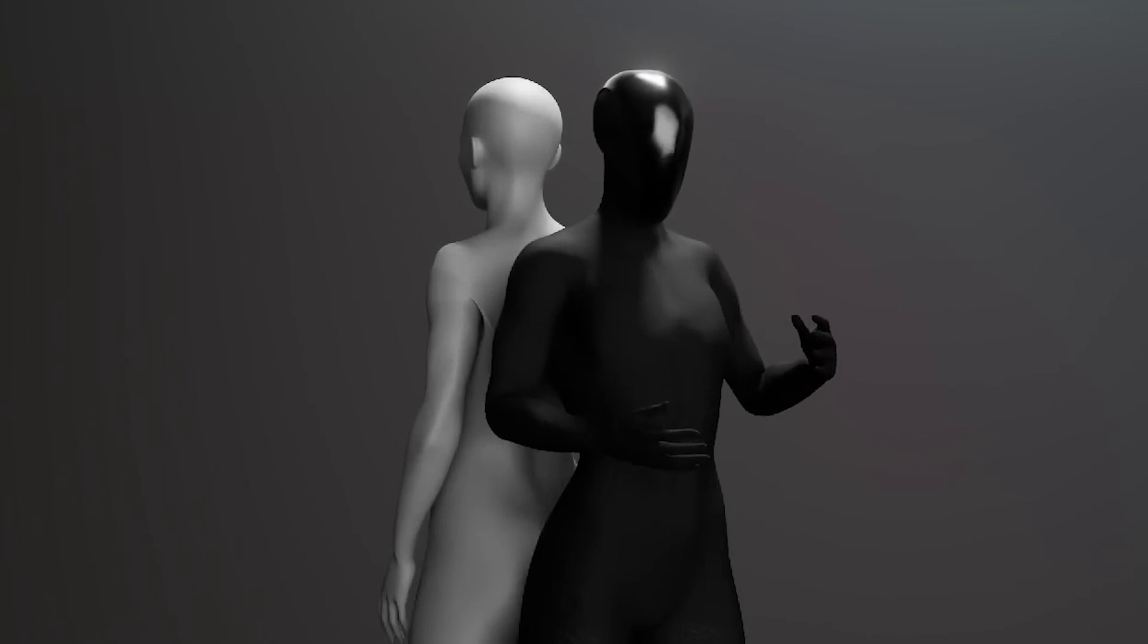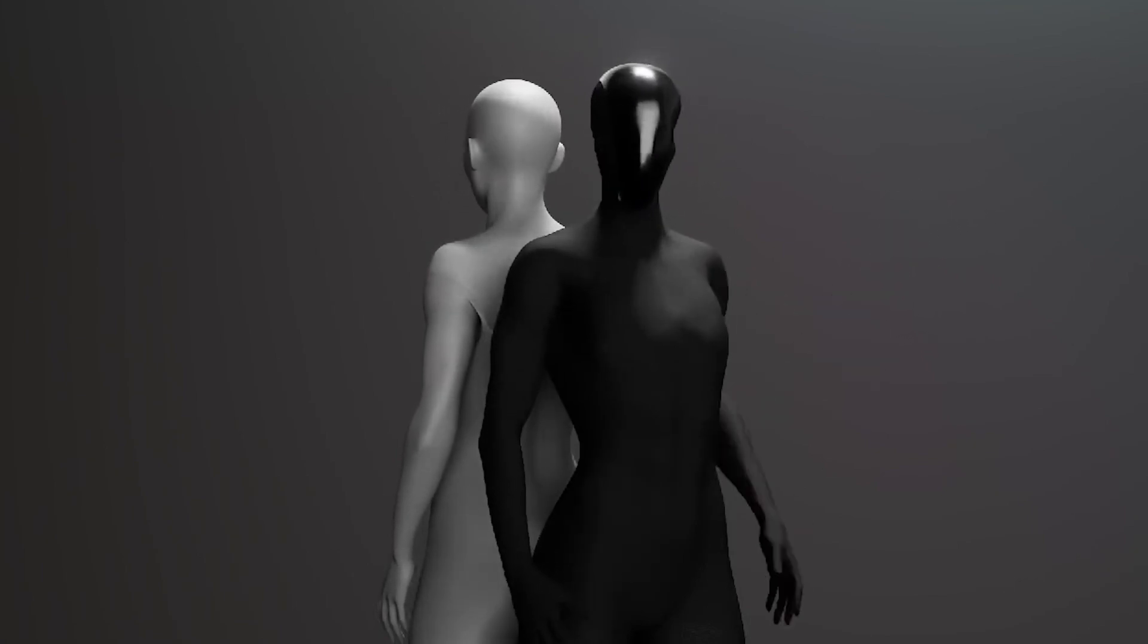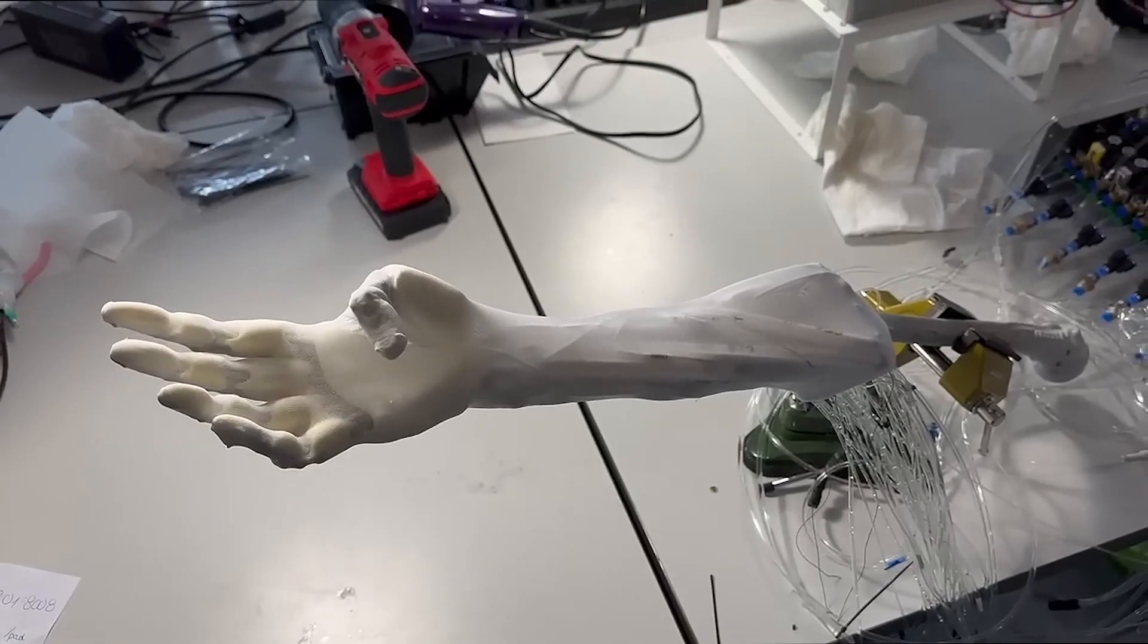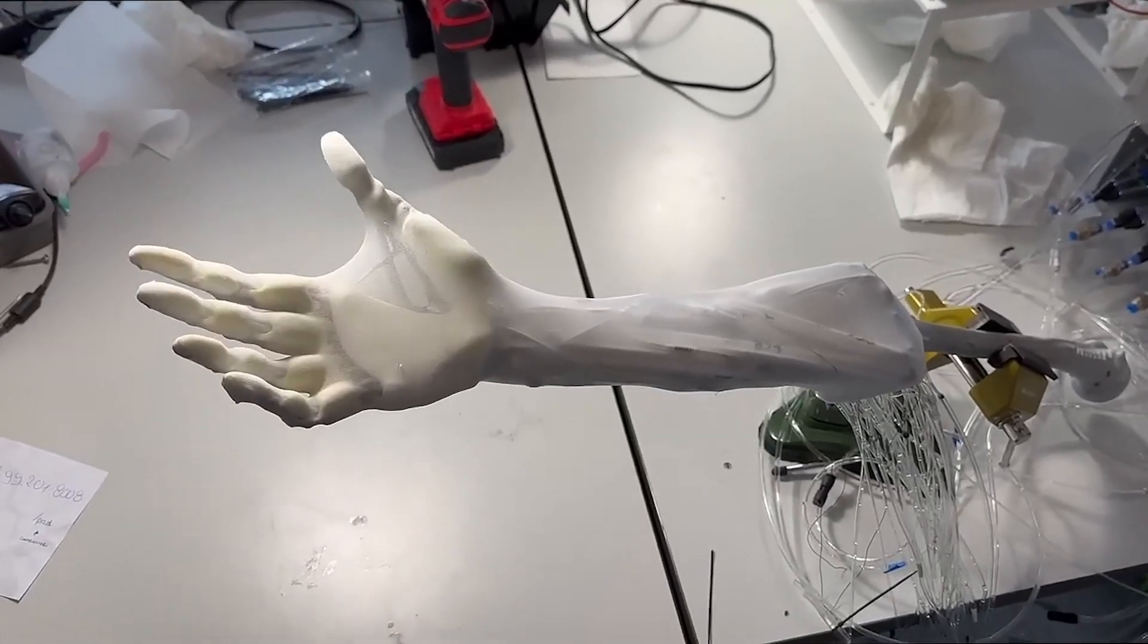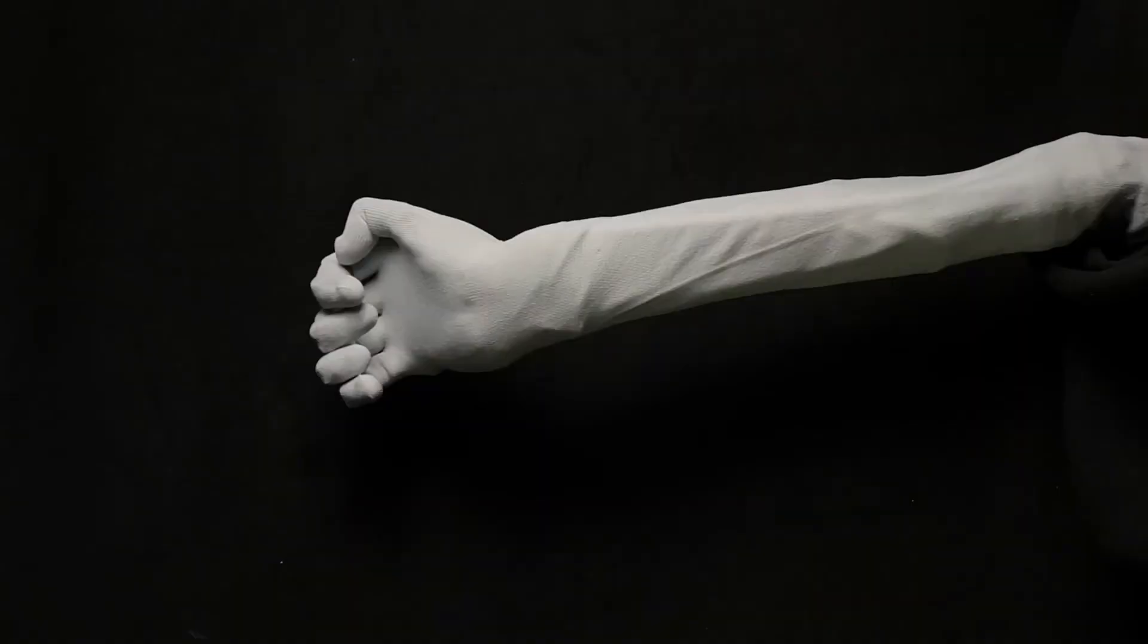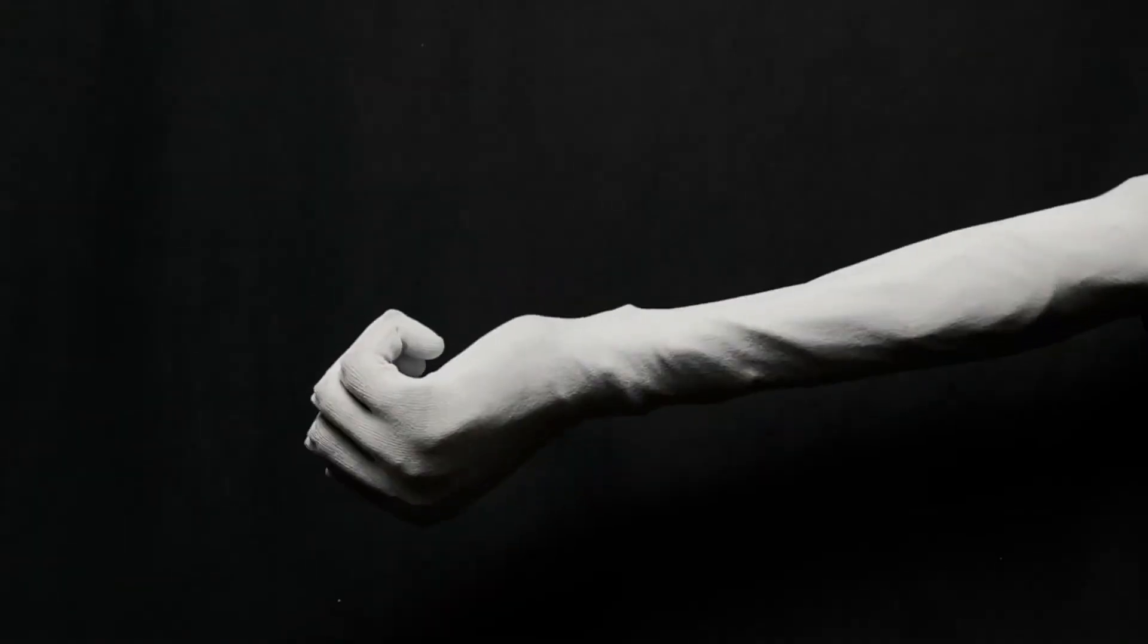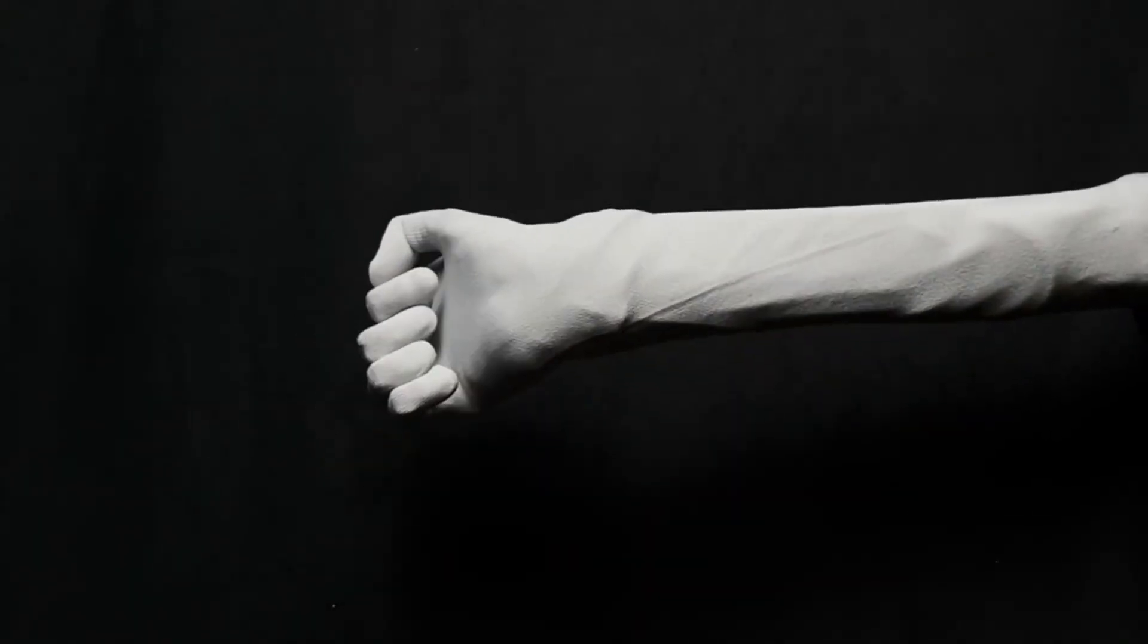One of the key decisions that shaped Clone Alpha was the choice to use water-powered muscles instead of traditional motors. This approach gives the robot a softer, more human-like quality, making it better suited for tasks that require delicacy and precision. It also allows for more compact and efficient designs, as the hydraulic system eliminates the need for bulky mechanical components.